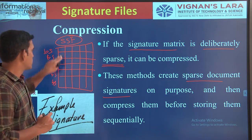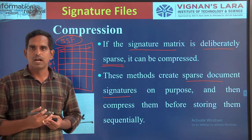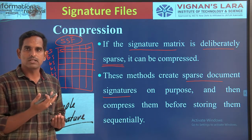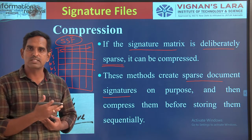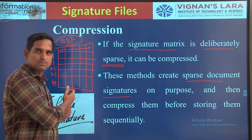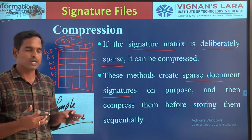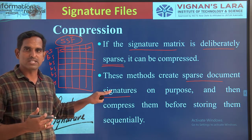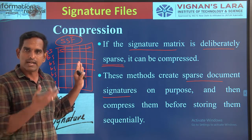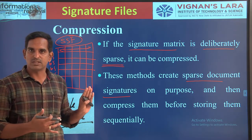You have to create sparse signatures, deliberately create them, and then compress them. Whatever signature file you are going to get will be better space efficient compared to your sequential signature file. Even by deliberately creating a sparse matrix and then performing compression, it will reduce space compared to your sequential signature file.